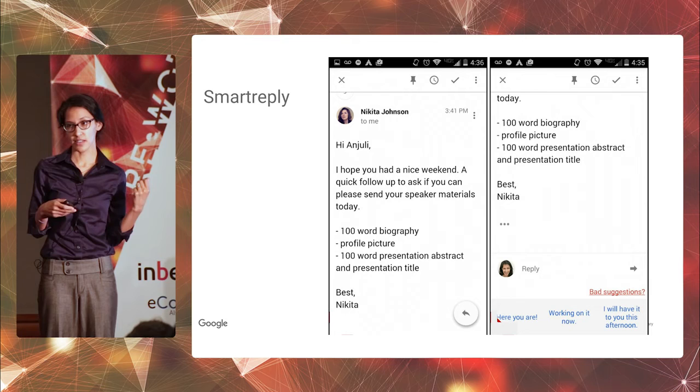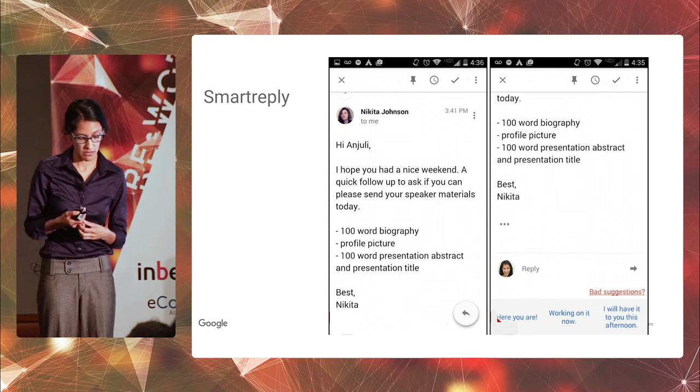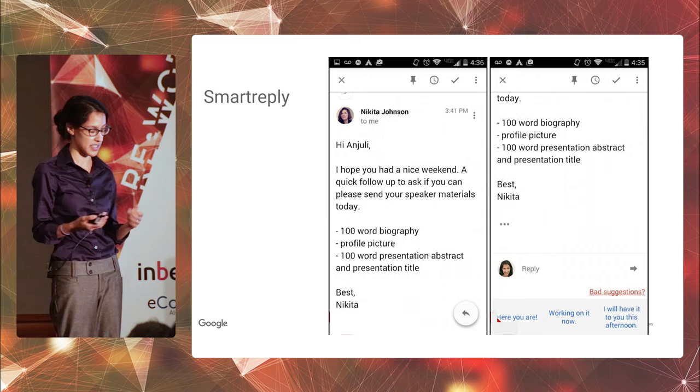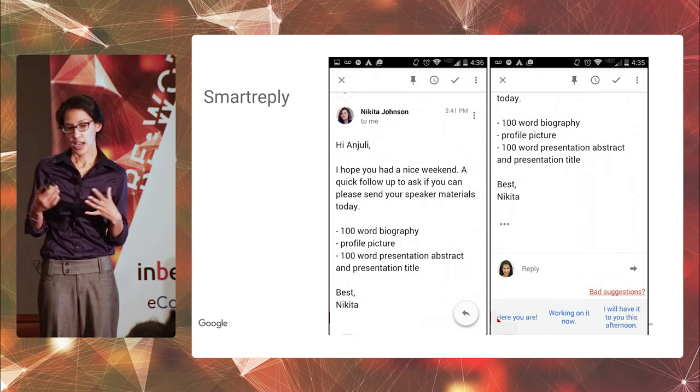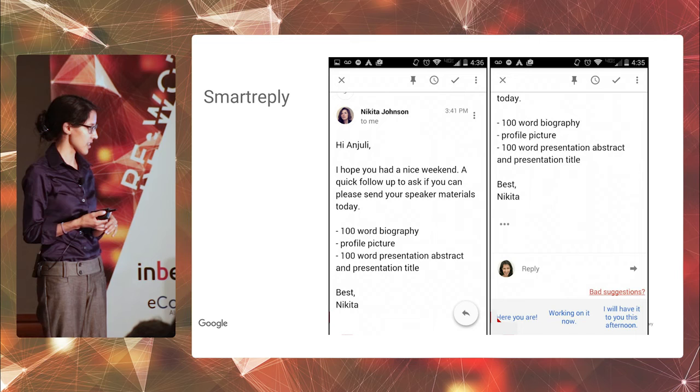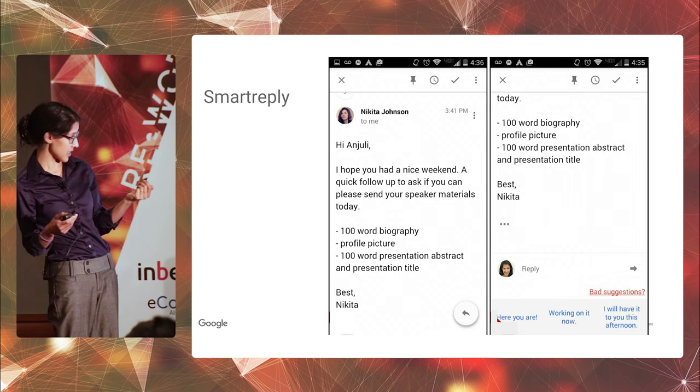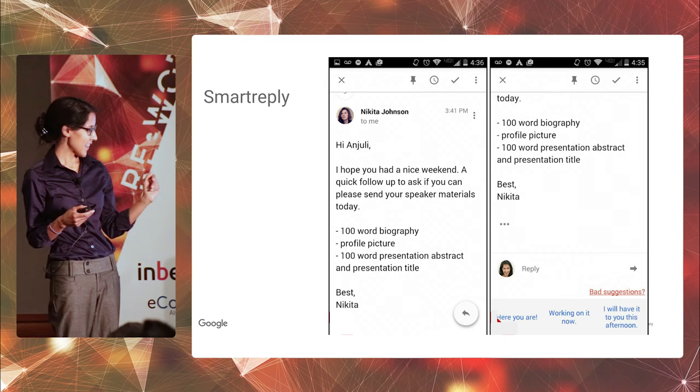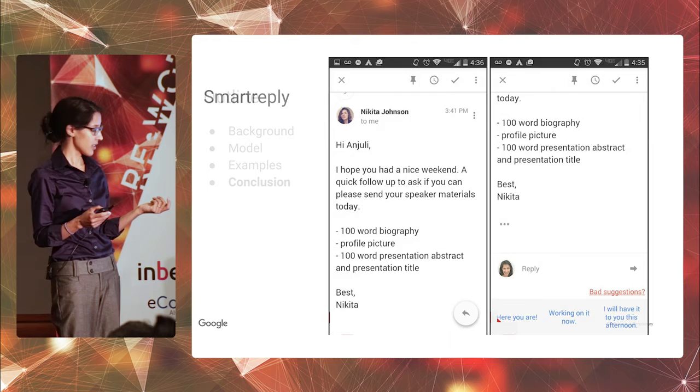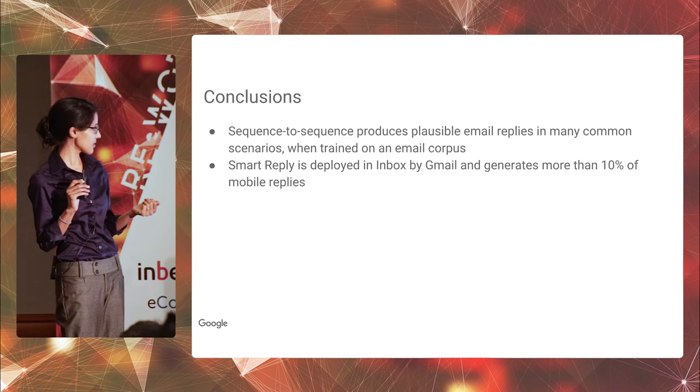I guess I'm running short on time, so I have to skip a few slides. So this is launched. It's launched in Inbox by Gmail. It's now used to compose over 10% of mobile replies in Inbox. Over 10% of these replies use the assistance of this feature. And basically what we do is we just use the model generally as I just demonstrated. There's some filtering for diversity. There is whitelisting. And then we show the best three options to the user. So this is just an example of an email I received from the organizer of this conference asking me to send an abstract and a bio. And the responses are, here you are, working on it now, and I will have it to you this afternoon.